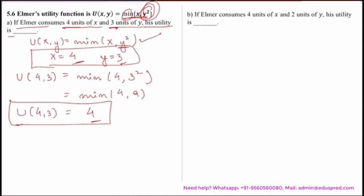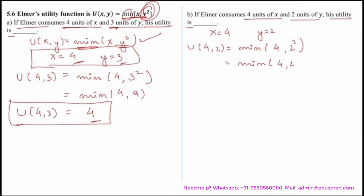Moving on to the next part. If Elmer consumes 4 units of x and 2 units of y, his utility is blank. We repeat the same process with x equal to 4 and y equal to 2. The utility at (4, 2) is minimum of 4 and 2 squared, which is minimum of 4 and 4, equal to 4. So the utility at (4, 2) is 4.